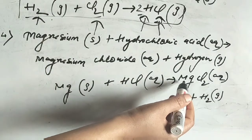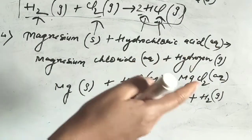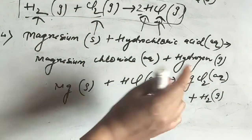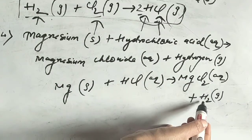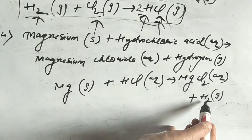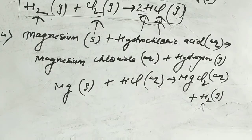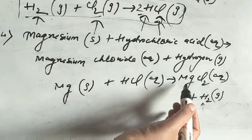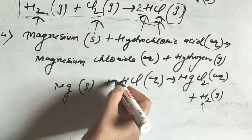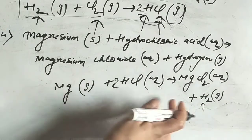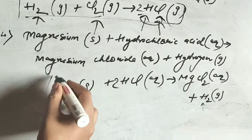Magnesium has valence 2 and chlorine has valence 1, so cross multiplying gives MgCl₂. Hydrogen exists as H₂ to achieve noble gas electronic configuration. Balancing: Mg is 1 molecule on each side — balanced. H is 1 on the left but 2 on the right, so put 2 in front of HCl. Cl becomes 2 on each side — balanced. The balanced equation is: Mg (s) + 2HCl (aq) → MgCl₂ (aq) + H₂ (g).